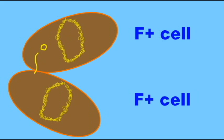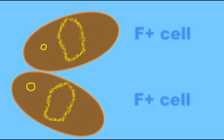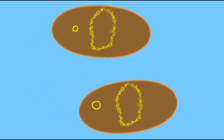An F-plus cell can recognize an F-minus cell, form what's known as a sex pilus, a projection which will attach to the other cell and draw it close.